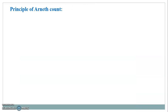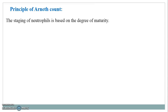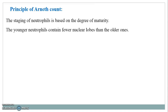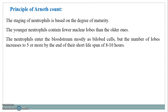The basic principle of the Arneth Count is based on the degree of maturity. Younger neutrophils contain fewer nuclear lobes than older ones. Neutrophils enter the bloodstream mostly as bilobed cells, but the number of lobes increases to 5 or more by the end of their short lifespan of 8 to 10 hours.